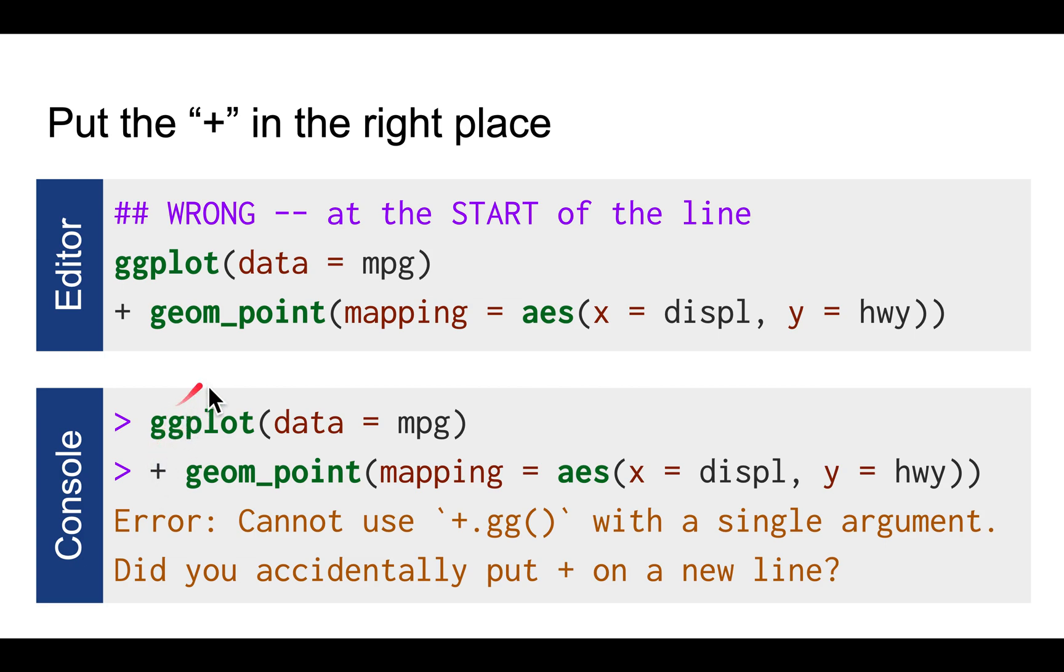And if you try to run this wrong code, the editor will basically give you an error that says, hey, you did something wrong, so you better fix it. So if you see this error, you know what you did wrong. You put the plus at the start when it should be at the end.